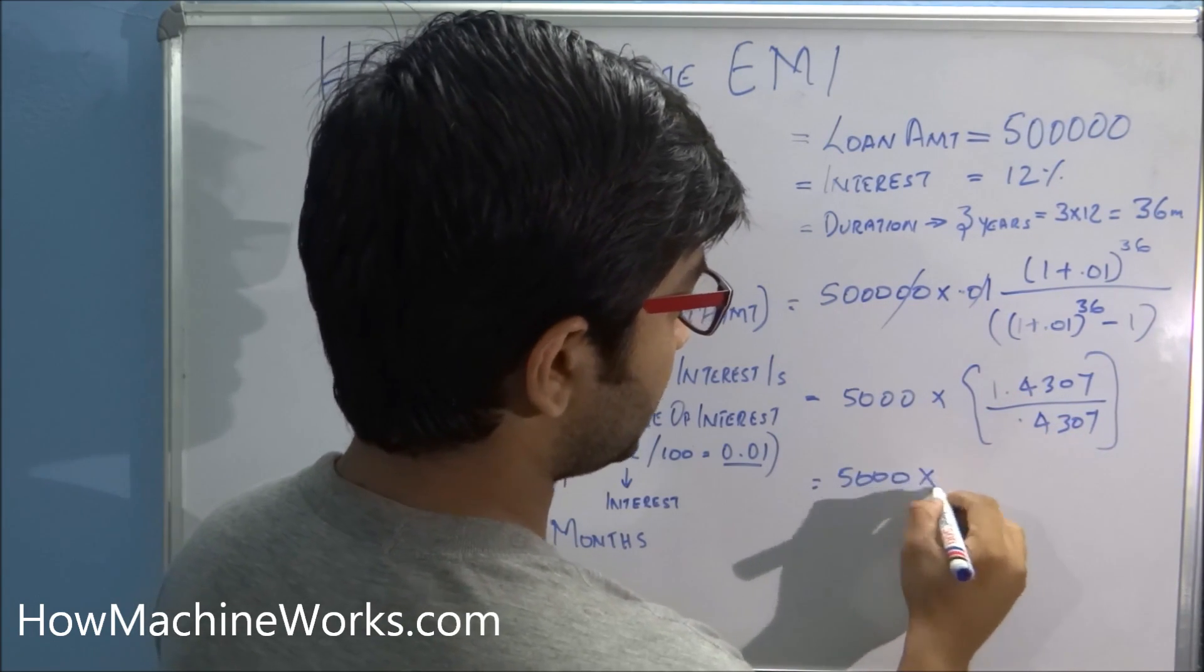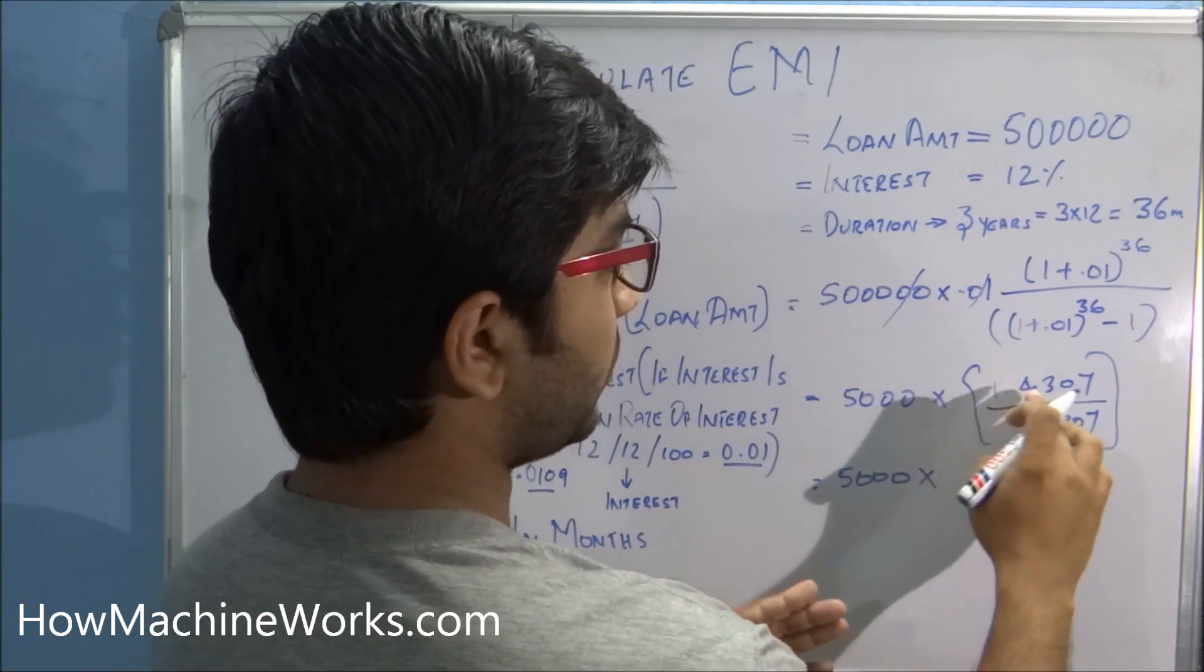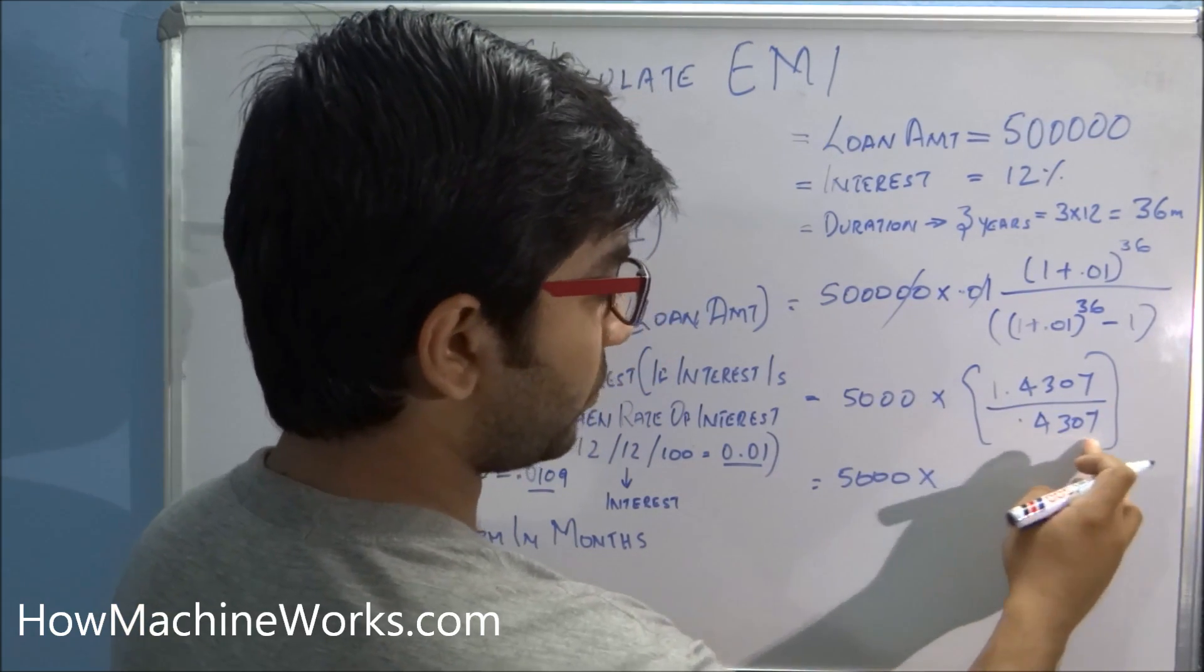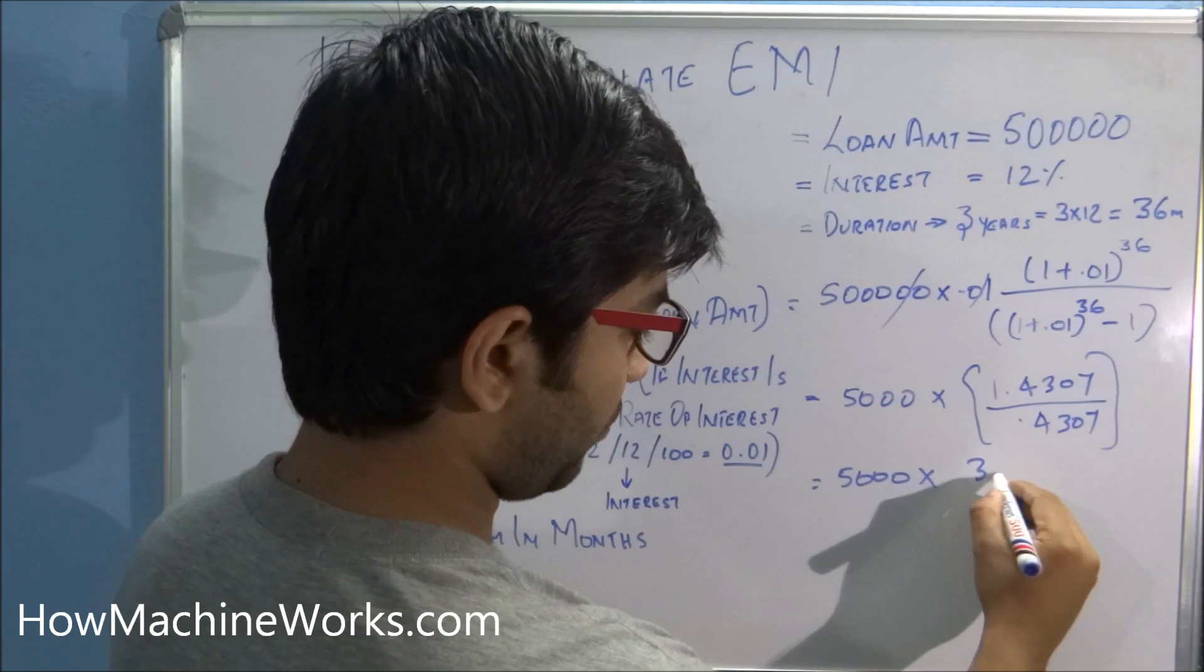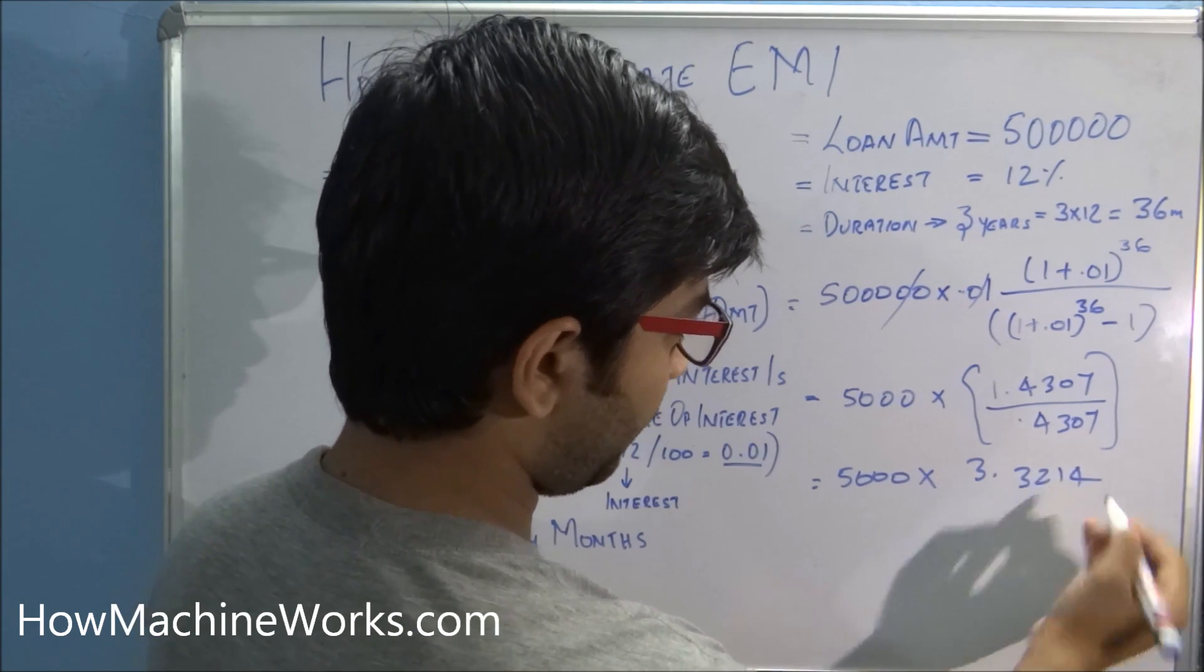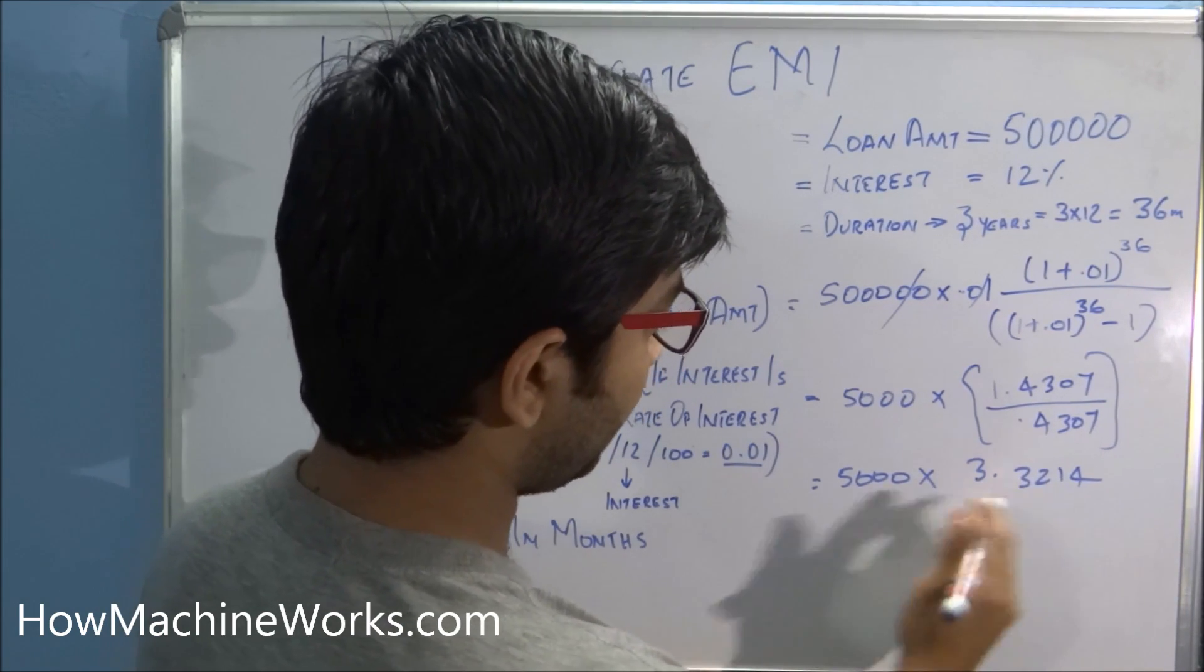So going further, what we have is 5000 into 1.4307 divided by 0.4307 gives you the value 3.3214. So multiplying both, this we get the final value is 16,607.14.